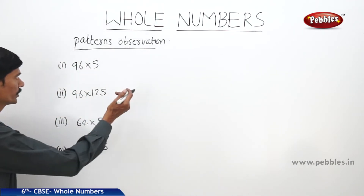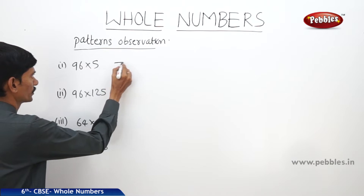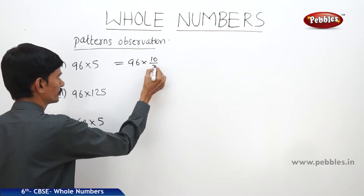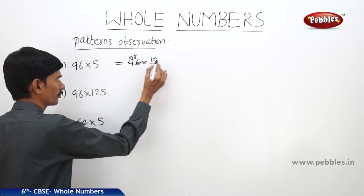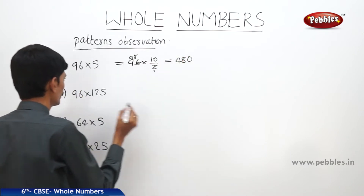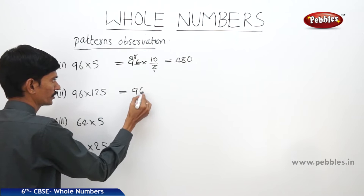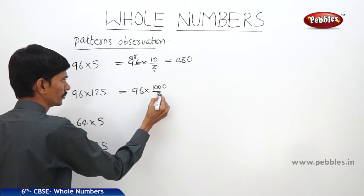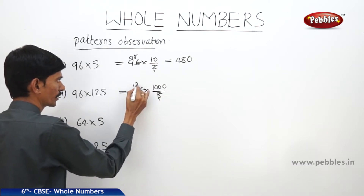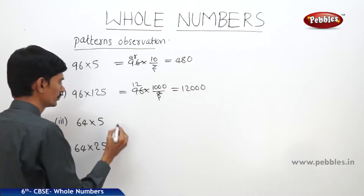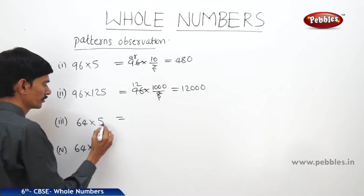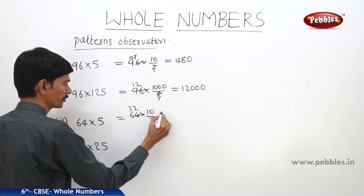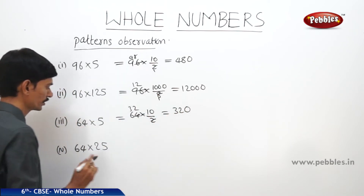We can use the following patterns while multiplying. For 96 into 5, this can be written as 10 divided by 2, so 48 into 10 is 480. For 96 into 125, this can be written as 1000 divided by 8, so 12 into 1000 is 12,000. While multiplying 64 by 5, 64 into 5 can be written as 10 divided by 2, so 32 into 10 is 320.